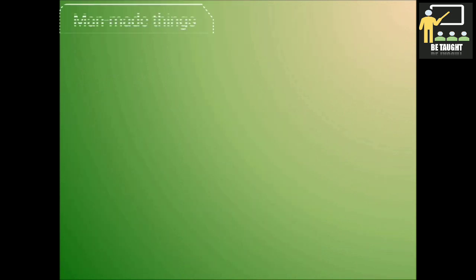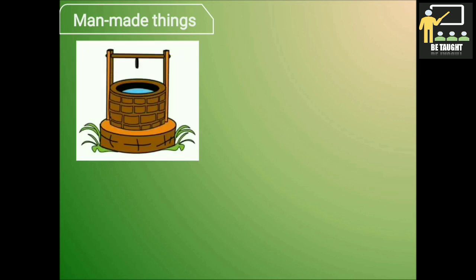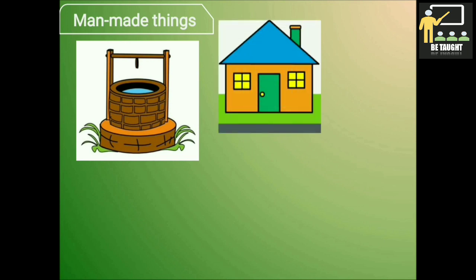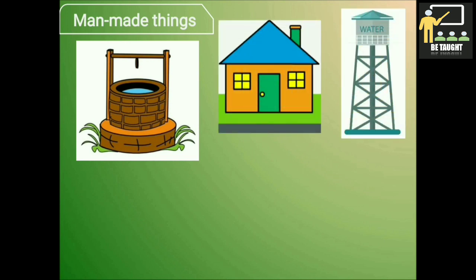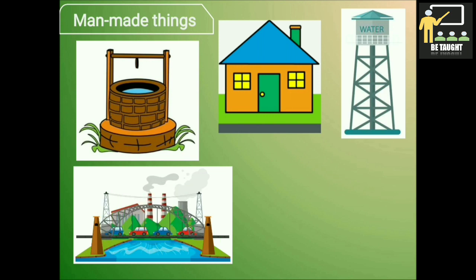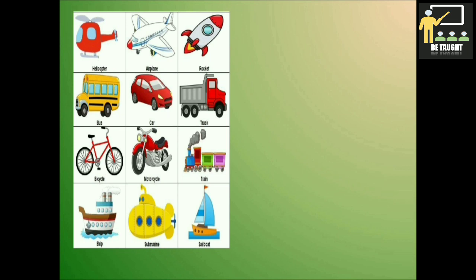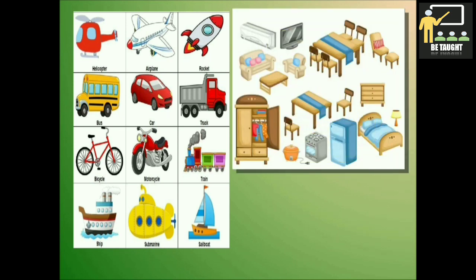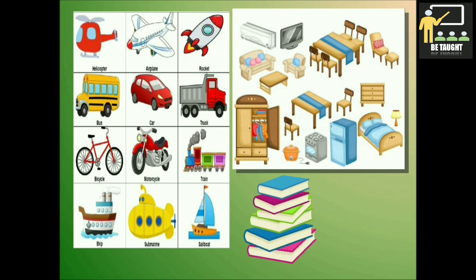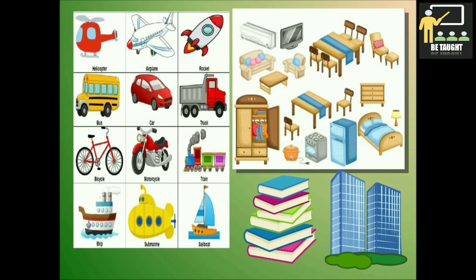Now we shall understand and know about the man-made things. Things that are made by man are known as man-made things. For example, wells, houses, water tower, bridge, cars, factories, school, different kinds of vehicles, different furniture and electronics, buildings, clothes, books, towers, etc. All these are made by man, so they are the man-made things.